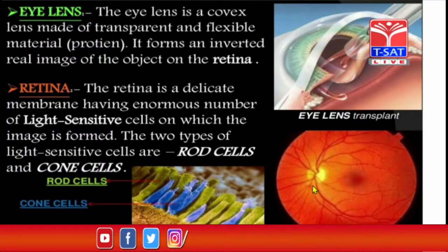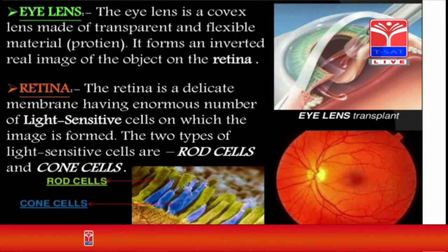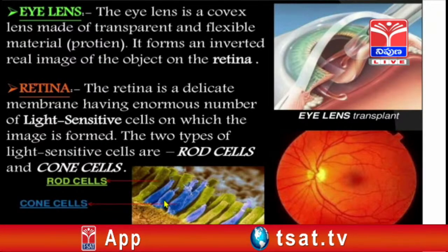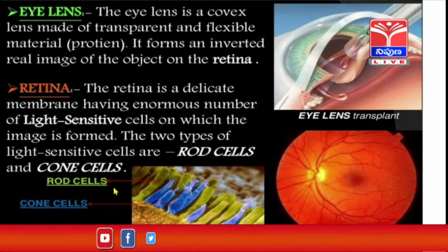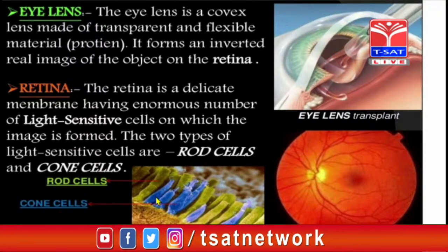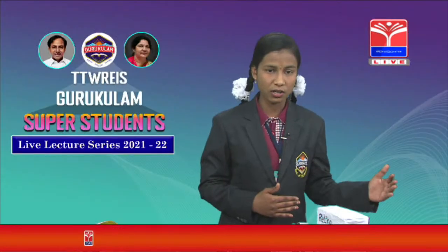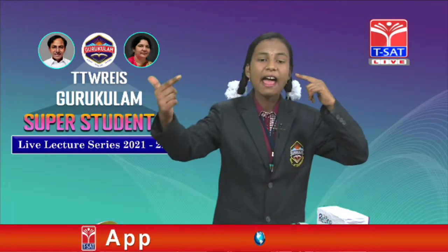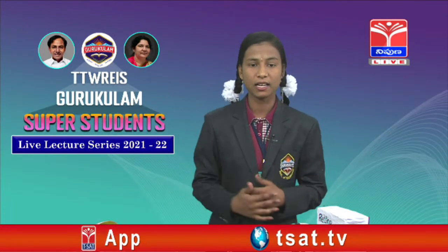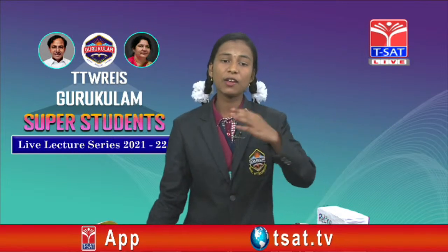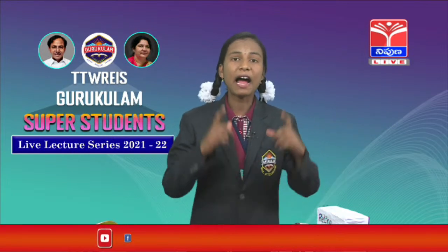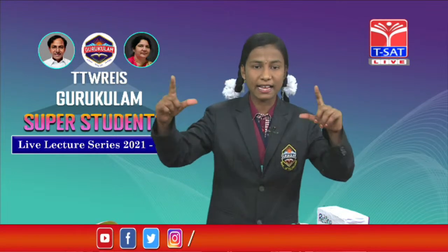Retina is a delicate membrane which contains 125 million receptors called rods and cones. The green ones are rods and the blue ones are cones. With the help of rods only, we can easily identify light intensity. With the help of cones only, we can easily identify colors. If there is a lack of cones, we can see an object but we cannot recognize its color.